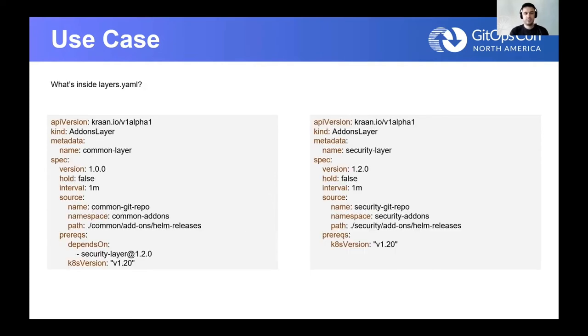Let's see what's inside the layers YAML file. Two of the most important configuration options here are the source and the prerequisite sections. The source will reference a git repository which contains the layer's contents. These are helm release files inside the git repository. All those helm release files will be installed as part of this layer. The prerequisite section is CRON's brain. It is what is driving CRON in applying those helm releases. They will only be applied after all the dependencies here are fulfilled.